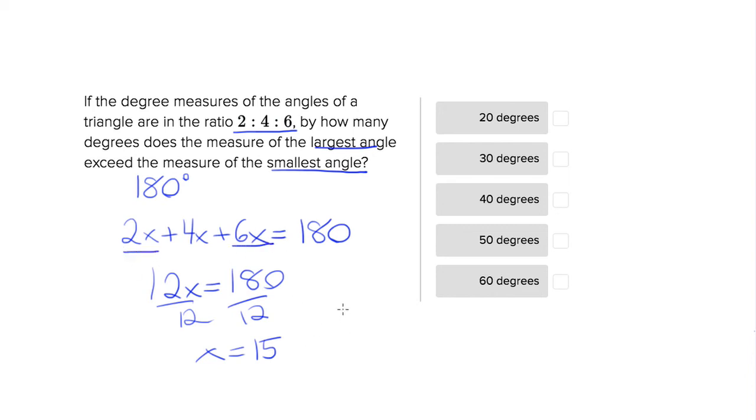So let's multiply it out. We don't want to say 6x, we want 6 times 15, and that's going to be 90. And we want to say 2 times 15, which is 30. So we want the difference between them, so let's subtract. And the difference is 60 degrees, and that's choice E.